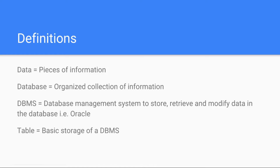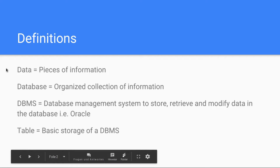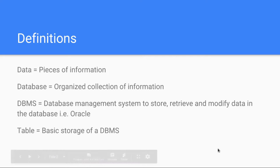There are several definitions that are very important when we're talking about databases. The first one is data. Data are basically just pieces of information — for example, your age, your height, or the place where you live. Any piece of information is considered data. A database is an organized collection of information. I'll show this to you in a graphic after we go through the definitions, so just bear that in mind.